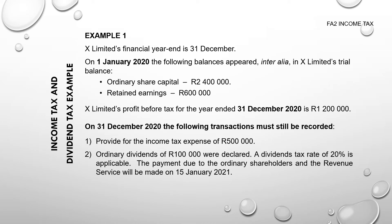Let's look at an example. In Example One we have Company X Limited, which has a financial year end on the 31st of December. On the 1st of January 2020, the following balances appeared inter alia — which is a Latin term meaning 'amongst others' — in X Limited's trial balance: ordinary share capital with a credit balance of R2,400,000; retained earnings with a credit balance of R600,000; and a profit before tax for the year ended 31st of December 2020 of R1.2 million.